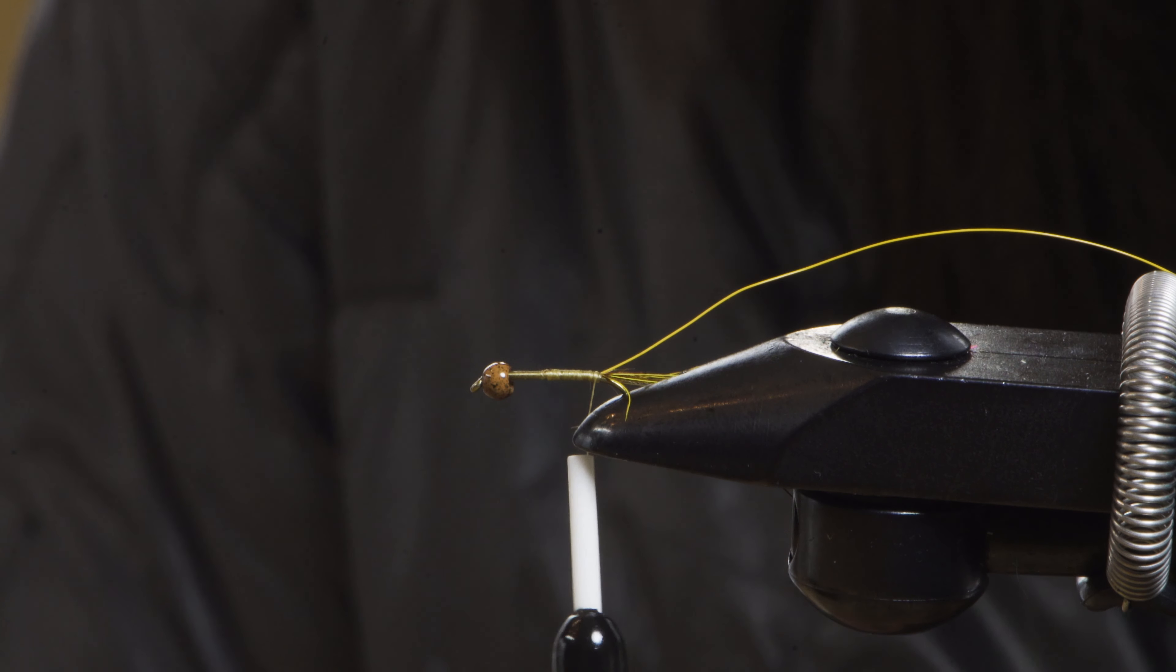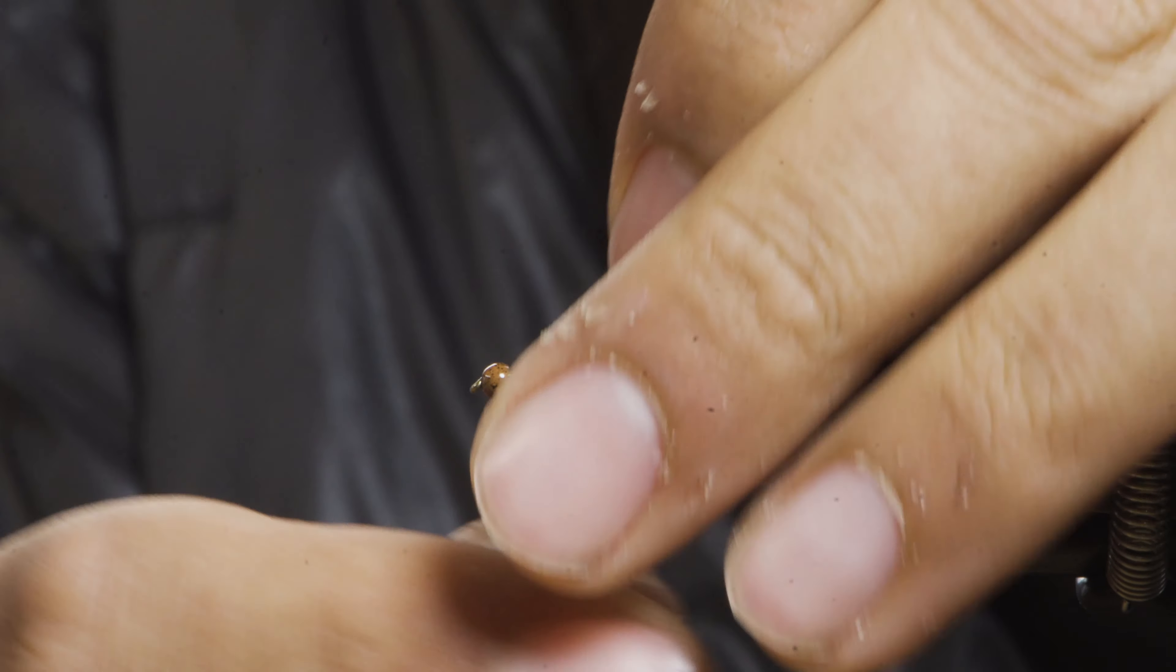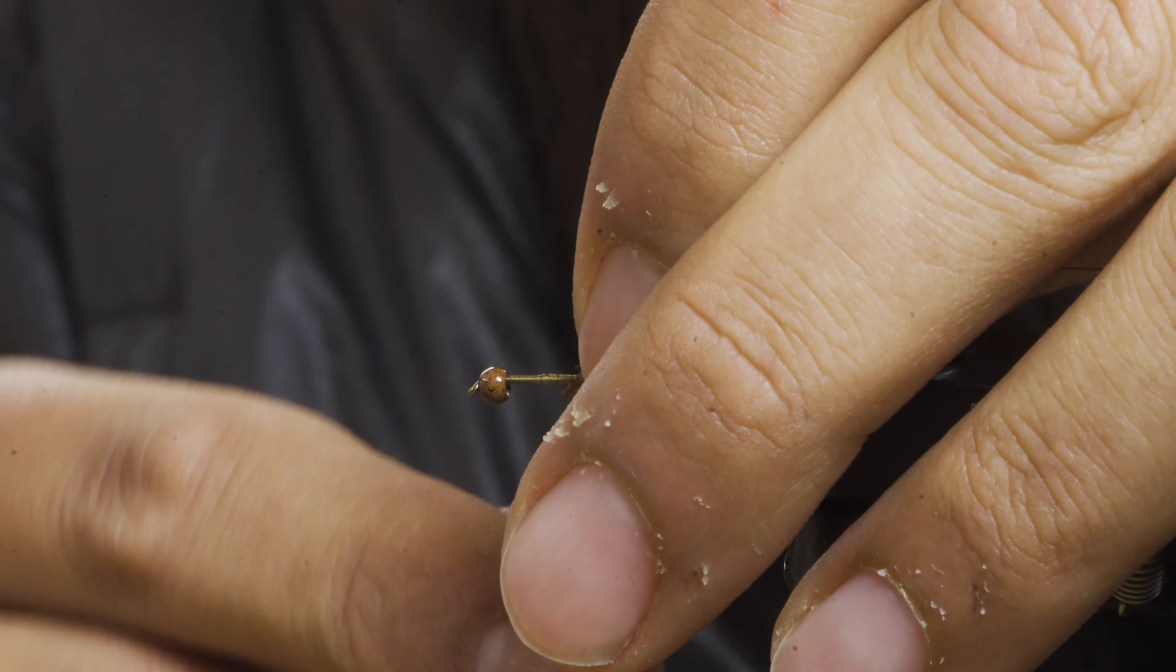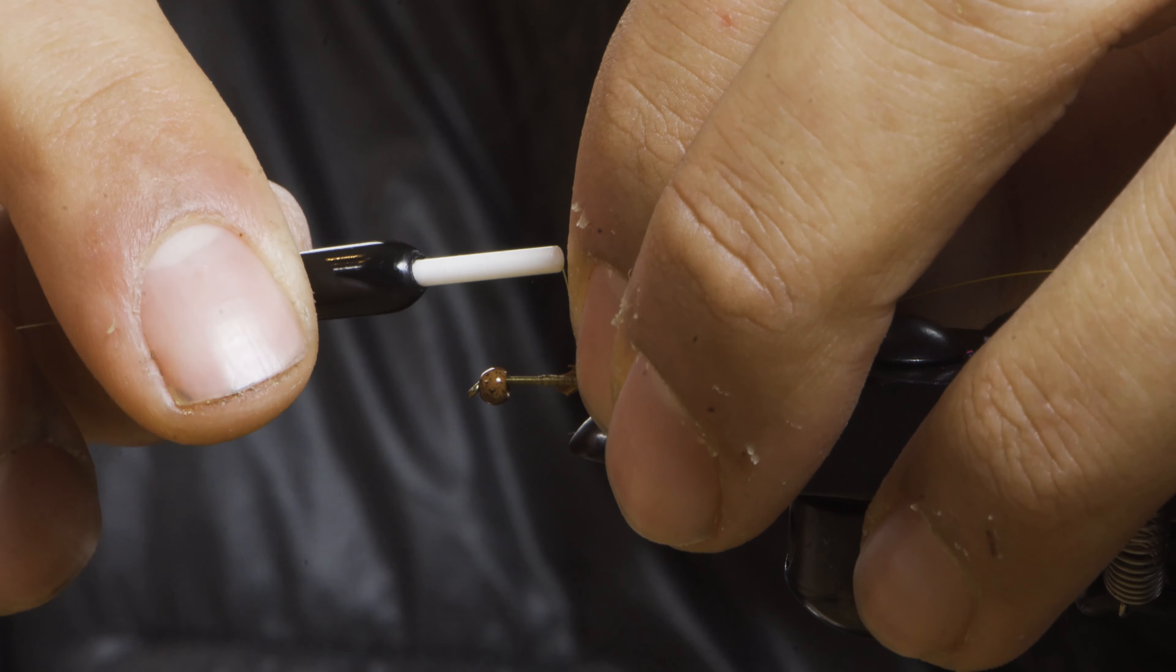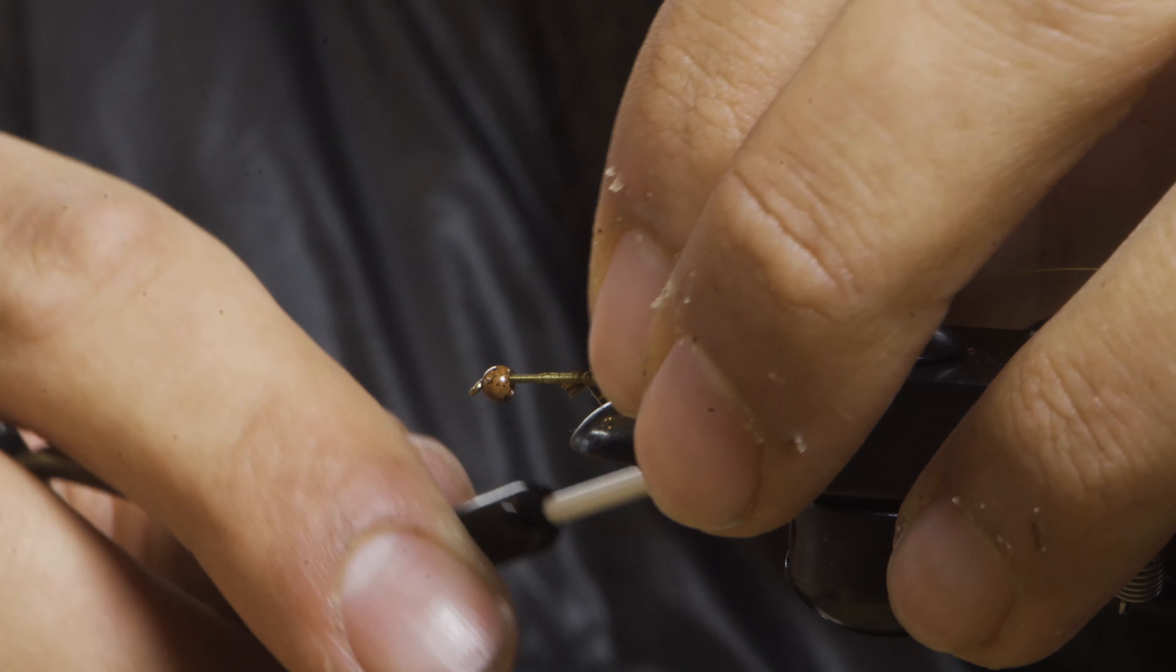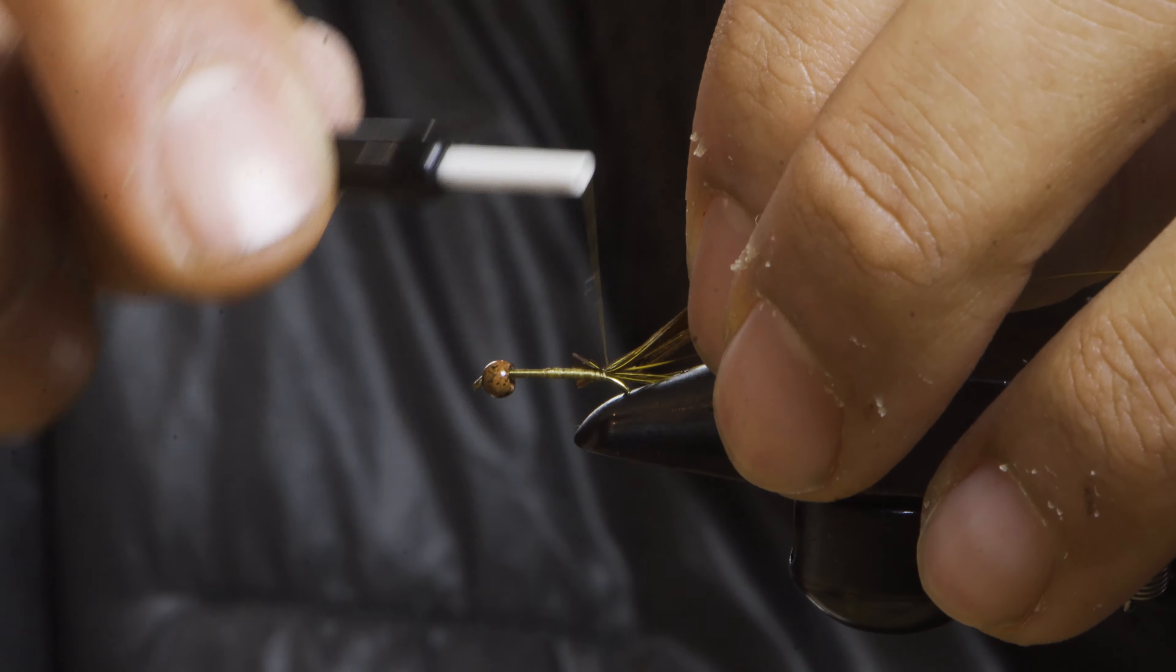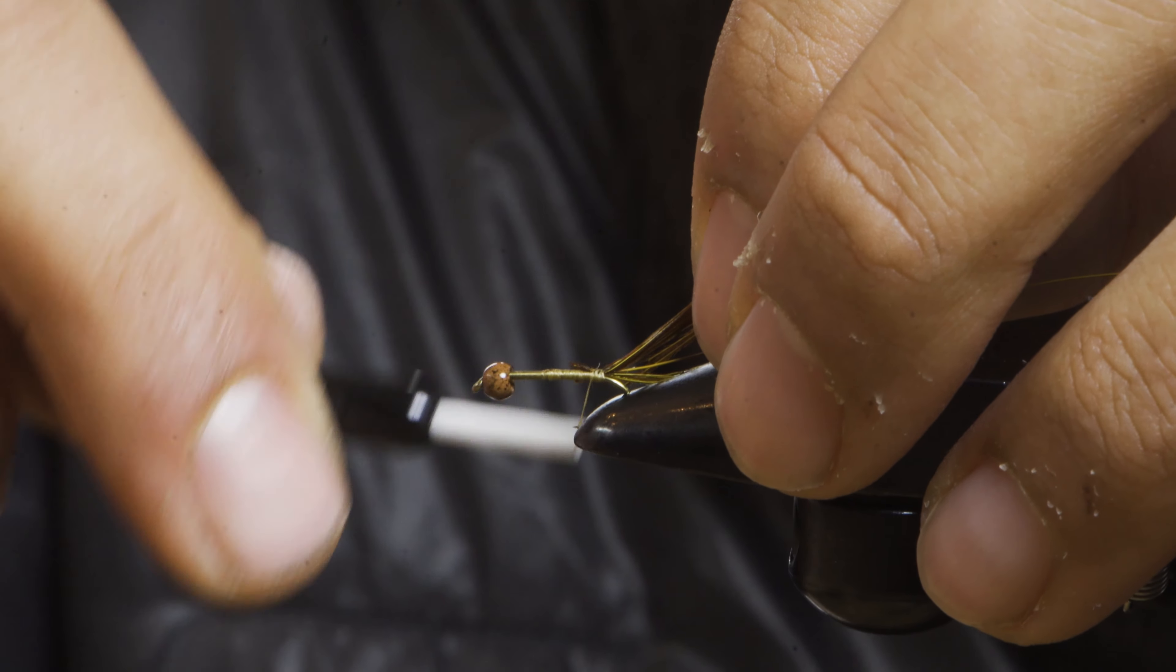I'm going to take that clump of pheasant tail I was using, attach it to the rear, and just one rep. I like to throw this on at a 45 to make it easier to tie it.